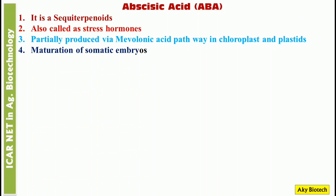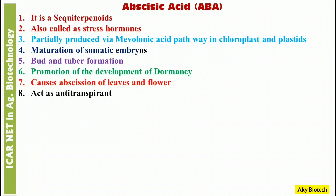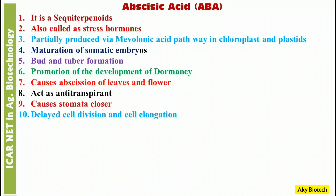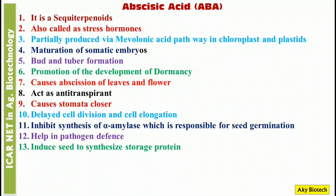ABA causes maturation of somatic embryos and bud and tuber formation. Number six, promotion of the development of dormancy. Number seven, it causes abscission of leaves and flowers. Number nine, it causes stomatal closure. Number ten, delayed cell division and cell elongation. Number eleven, it inhibits synthesis of alpha-amylase, which is responsible for seed germination. Number twelve, it helps in pathogen defense. Number thirteen, it induces seeds to synthesize storage proteins. ABA is a single compound.